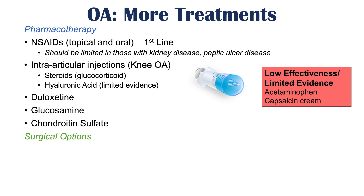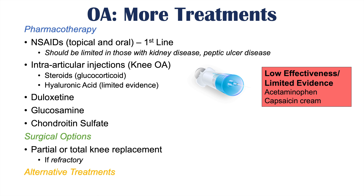Surgical options such as partial or total knee replacement are considered when all other treatments have failed and pain is refractory. Acupuncture is an alternative therapy that can also help relieve pain in some cases. For more information on rheumatoid arthritis, check out that lesson. Please like and subscribe for more lessons like this one — thank you for watching.